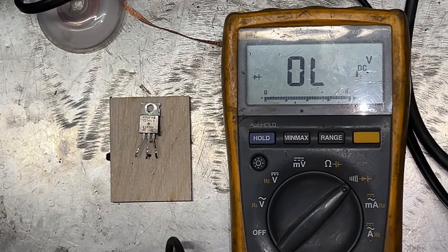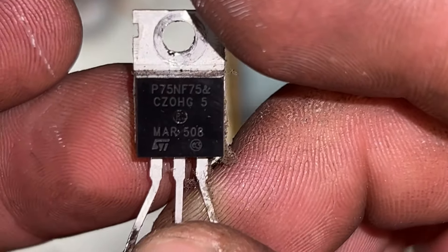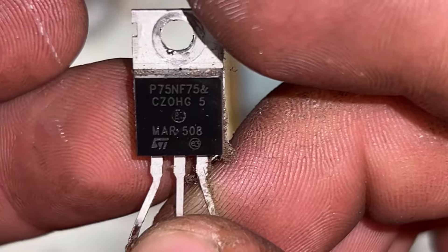Let's see how we're going to test this MOSFET. First we need to identify the number on the top. You can see it's P75 and F75.